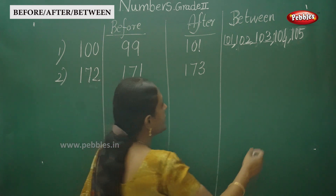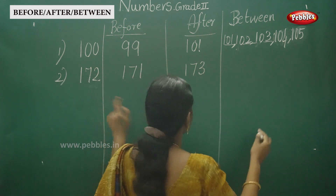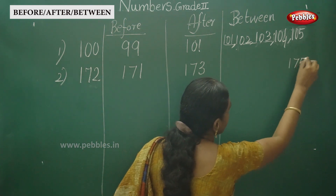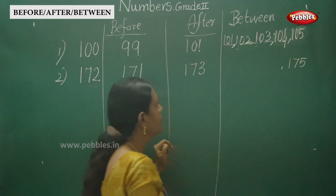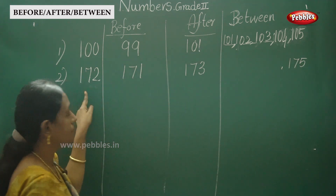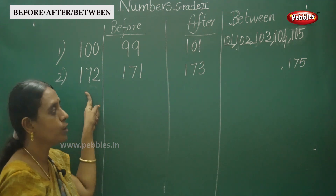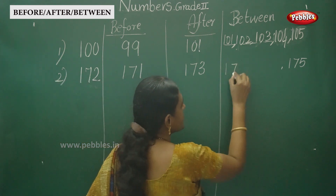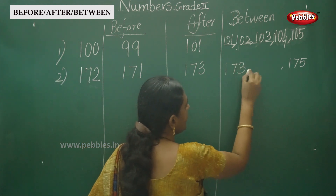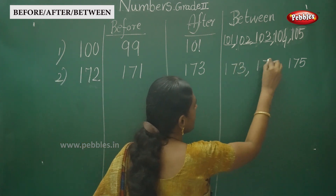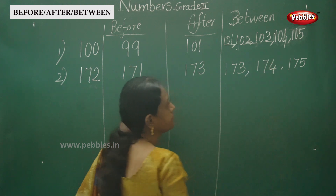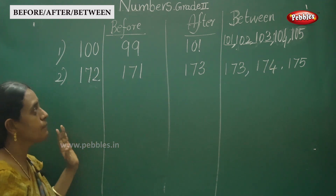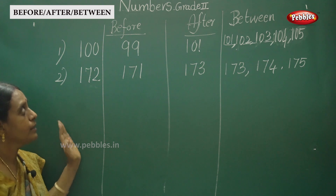Then, between numbers: here is 172 and here is 175. What comes between? That is 173 and 174. This is the way to write before, after, and between numbers.